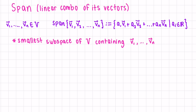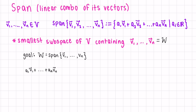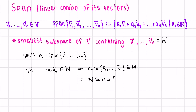The span is not just any subspace — it's actually the smallest subspace of V containing the vectors v1 to vn. Let's call this W, and let's show that W equals the span of v1 to vn. First of all, by definition of span, because W is a subspace closed under addition and scalar multiplication, we can say any linear combination of the vi's is included in W. This means that the span is included in W. Now let's show it the other direction.